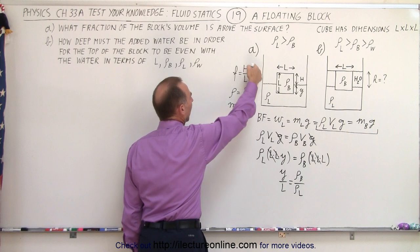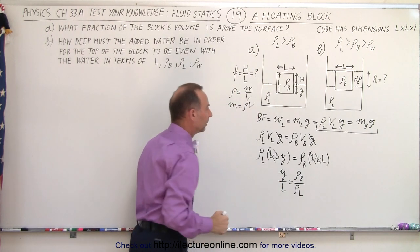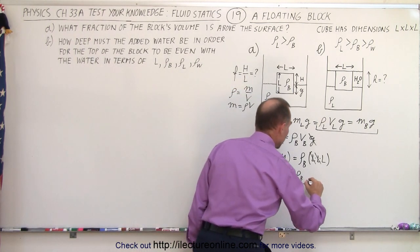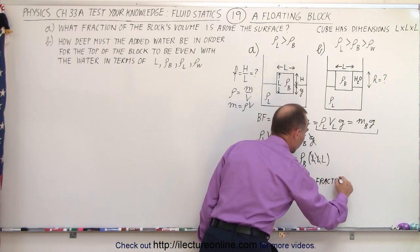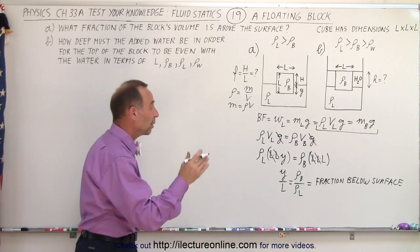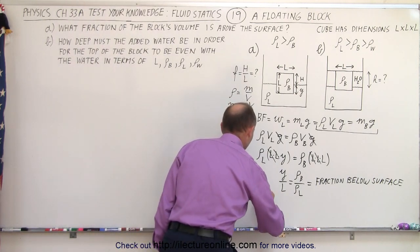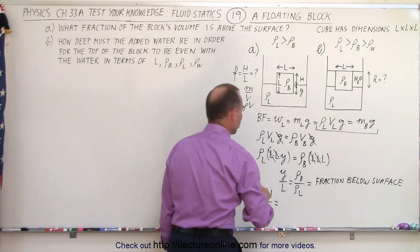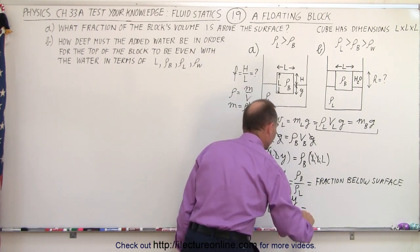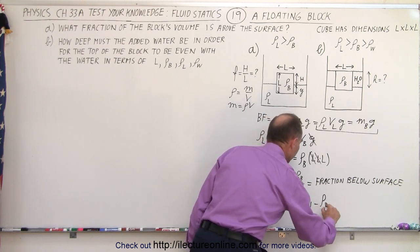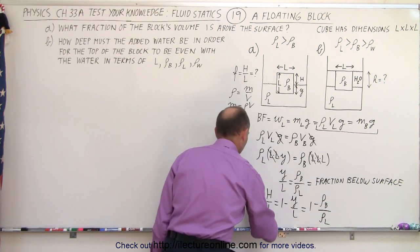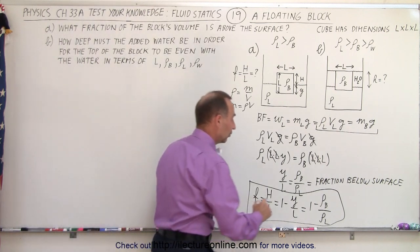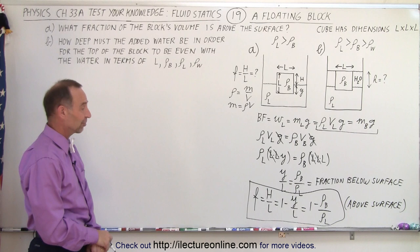Y over L is the fraction of the block below the surface. So if we want the fraction above the surface, it would be 1 minus that. Therefore the fraction above the surface, which is H over L, equals 1 minus Y over L, which equals 1 minus the density of the block divided by the density of the liquid. That is the equation for the fraction of the block above the surface, and that answers Part A.